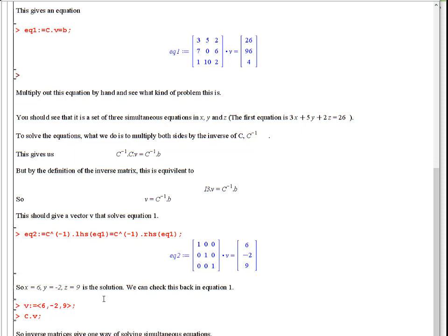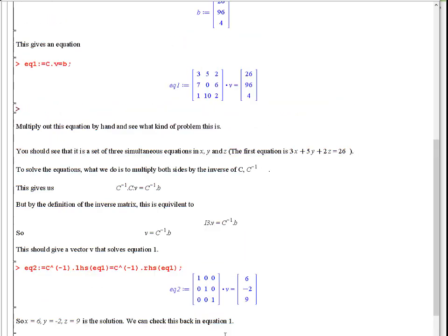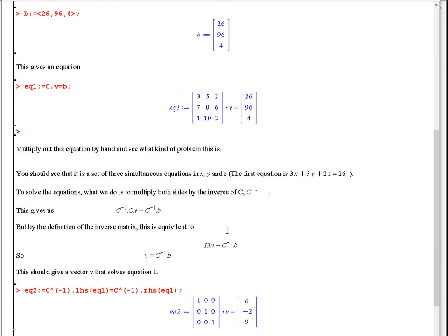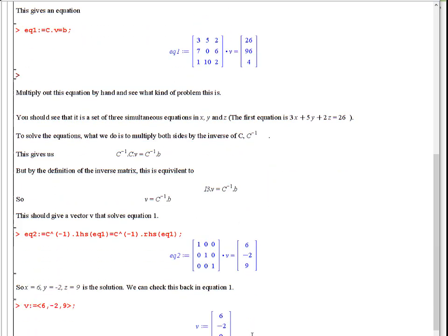If you check that back in equation 1, so if I now change v to 6 minus 2, 9, and then multiply that by c, I get 26, 96, 4, which is exactly correct what I need to get. So these answers for x, y, and z are correct.